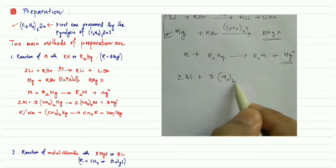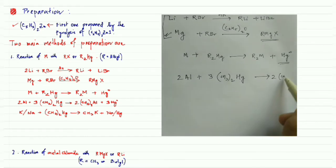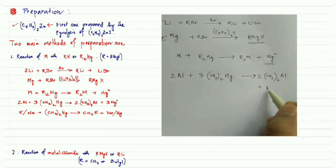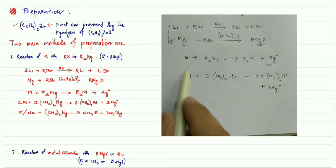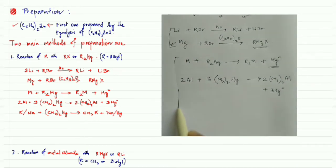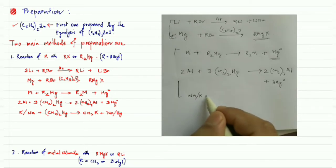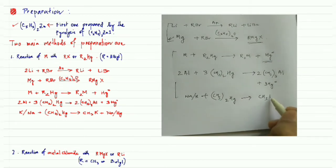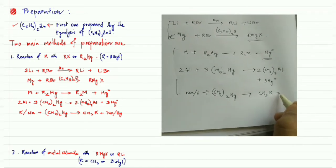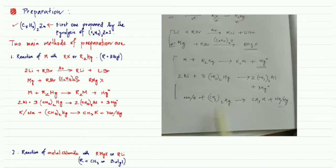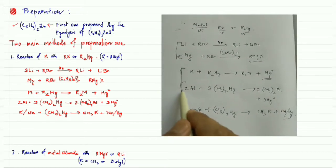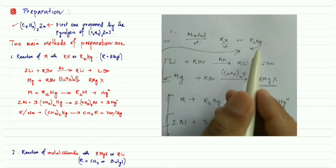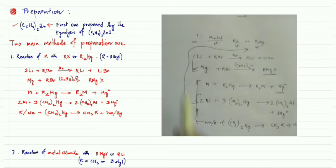Two moles of aluminum can react with three moles of dialkyl mercury to form an aluminum organometallic complex. Also, sodium or potassium can react with dialkyl mercury to give potassium or sodium organometallic compounds. These are examples of the second sub-type — reaction of a metal with dialkyl mercury.